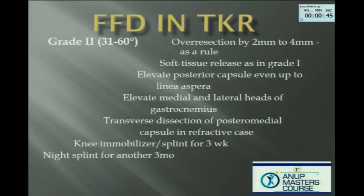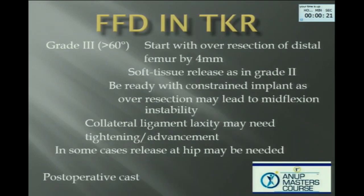Between 30 and 60 degrees — two to four millimeters as a rule. Posterior capsule: you can go up to the linear space, though it is not always necessary. Gastrocnemius releases are not always necessary either. You can do a transverse dissection of your posterior midline capsule, and then the patient needs to be immobilized. Once you get to 60 degrees or more, you have to be prepared to go for a constrained type of knee — always have that in theater. Try on your implants before you start cutting. Nobody is as lonely as a surgeon in trouble. The bigger your deformity, the longer you have to protect your patient.